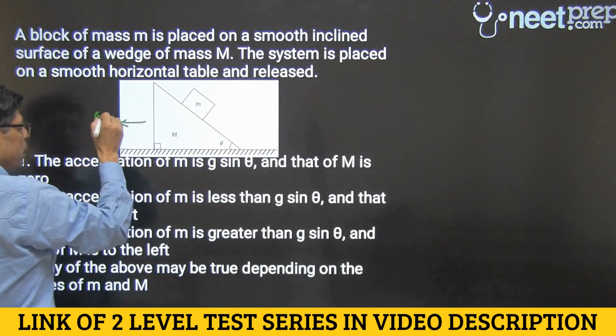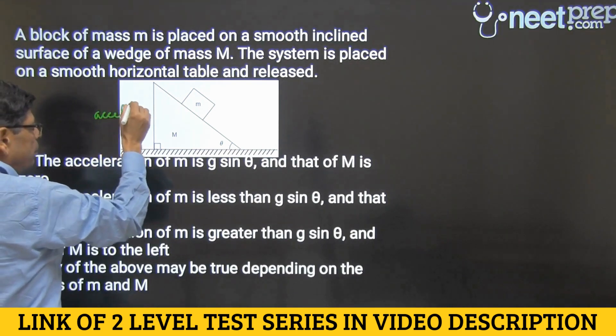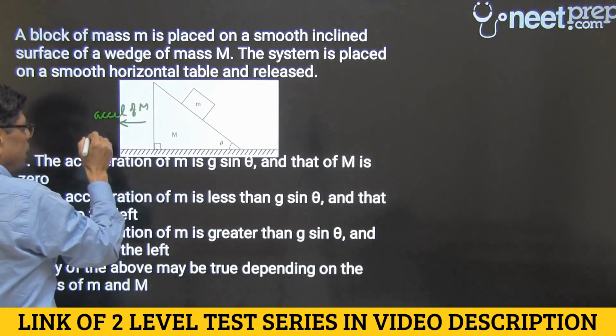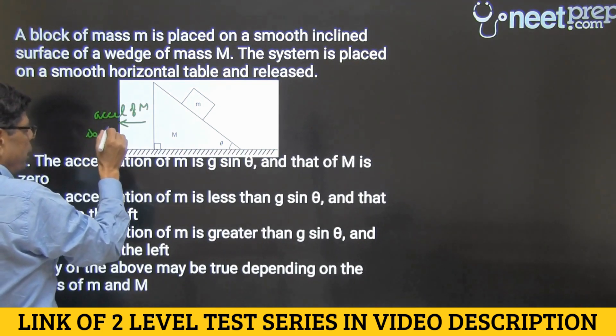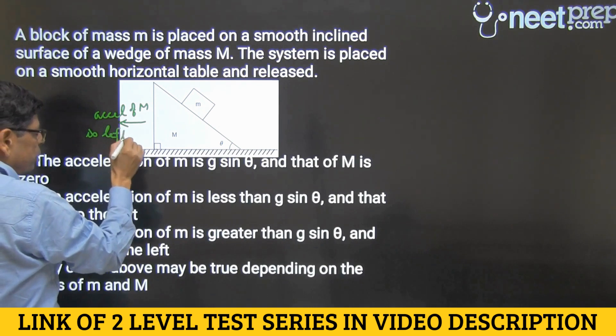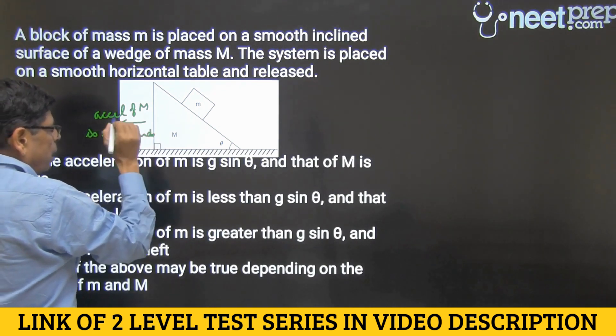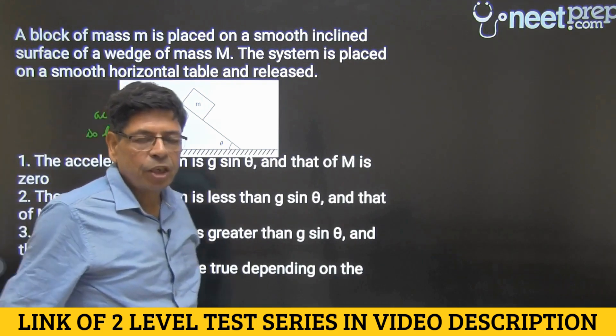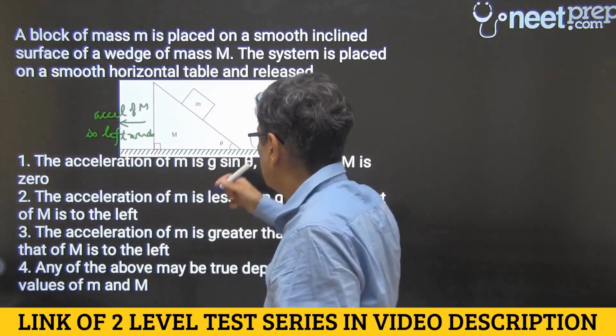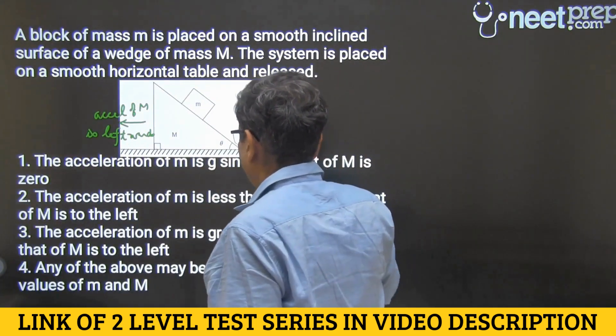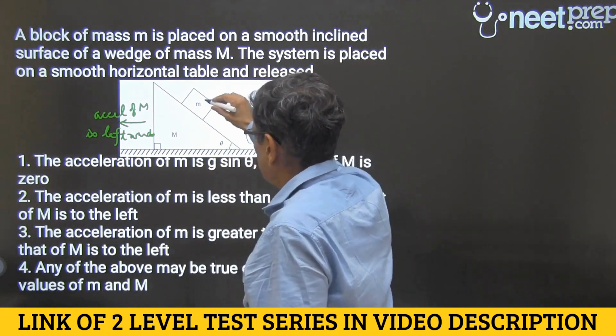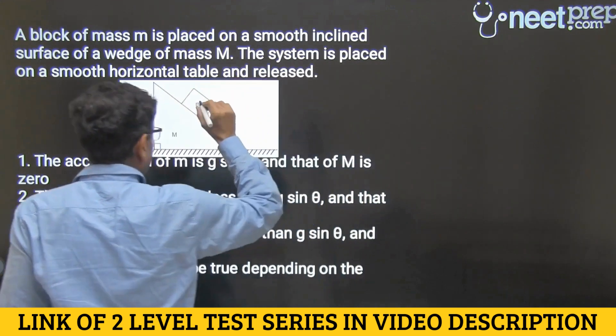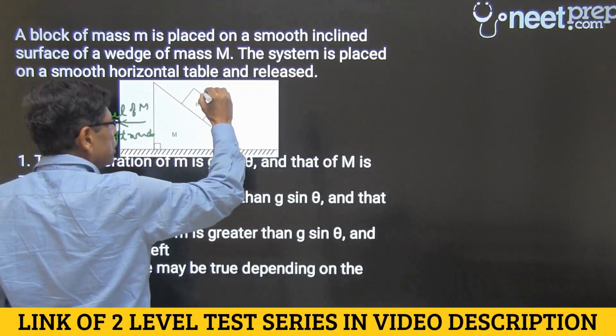Acceleration of capital M is towards left, that's clear. Now let's call the acceleration of chota m as a dash. So what are the forces acting on chota m? One is normal reaction acting this way, the other is mg, and a dash is its acceleration.